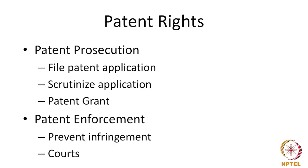Once the patent is granted, enforcement refers to steps taken by the patent holder to ensure that the patent right is not violated by others — which is what we refer to as infringement. The enforcement part happens before the courts. The task of the intellectual property office is to scrutinize the patent application and grant a patent, whereas the courts or judicial system are entrusted with the task of enforcing them. If there is an infringement of a patent, the patent holder will have to file an infringement suit before the courts.